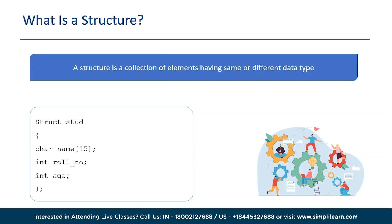Let's take a simple real-life example. If you want to keep a record of someone's name, age, and roll number, you can do this by creating separate variables. But if in the future you need to keep adding data for many people, you'd have to keep creating variables like name1, roll_number1, age1, name2, address2, roll_number2, age2, and so on. To avoid this, we can simply create a structure.